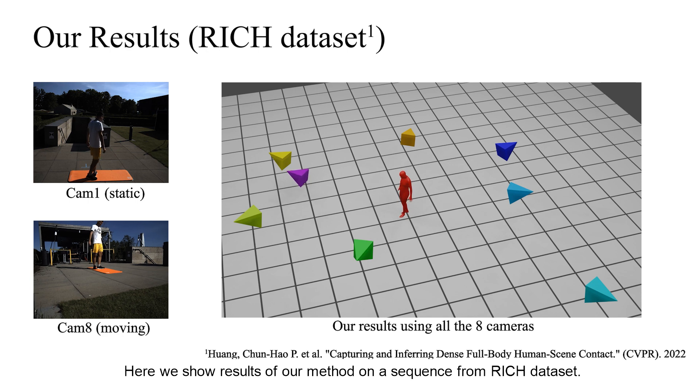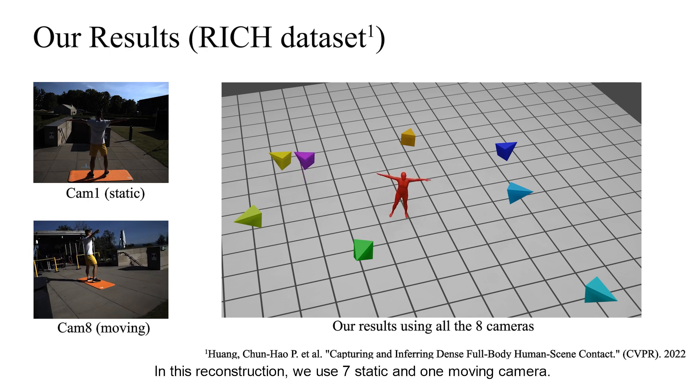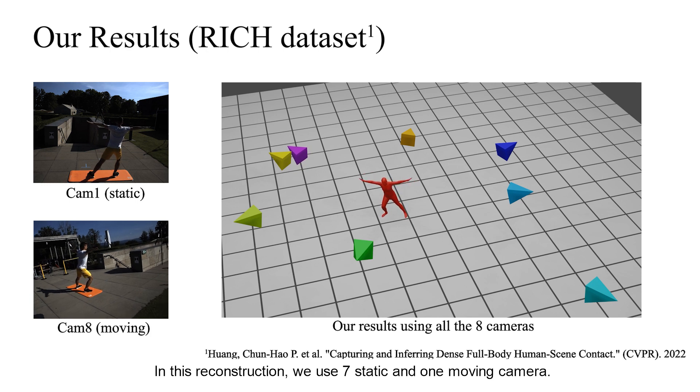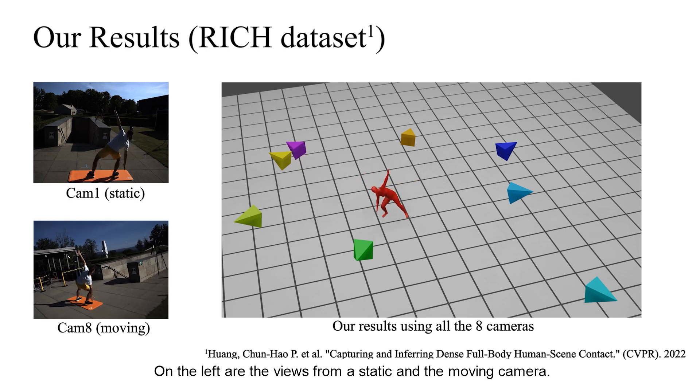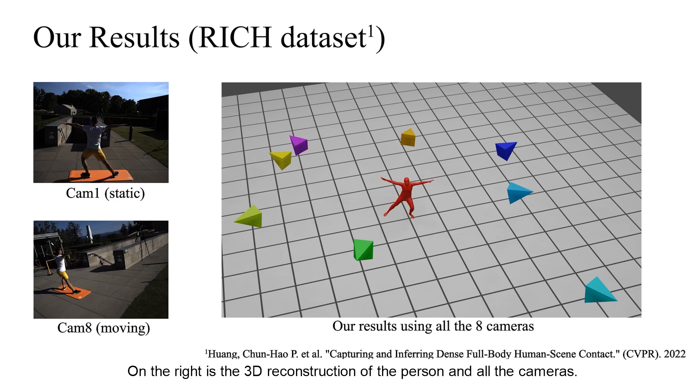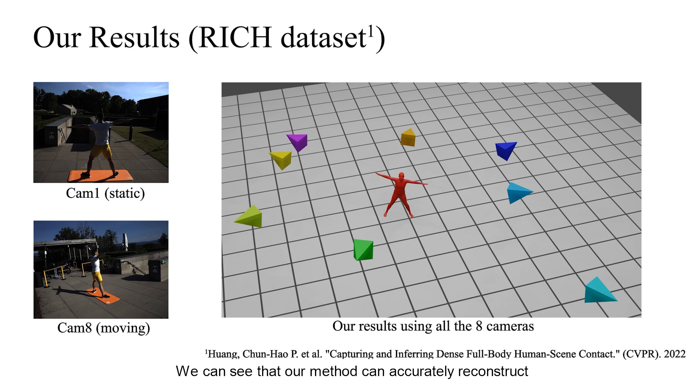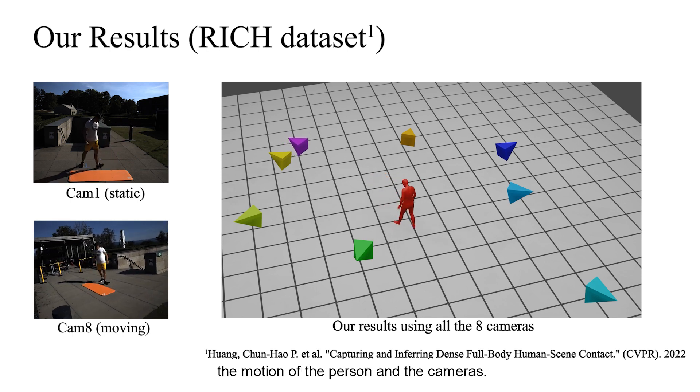Here we show results of our method on a sequence from rich dataset. In this reconstruction, we use seven static and one moving camera. On the left are the views from a static and the moving cameras. On the right is the 3D reconstruction of the person and all the cameras. We can see that our method can accurately reconstruct the motion of the person and the cameras.